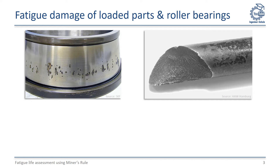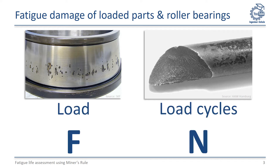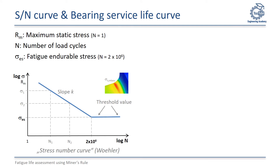In general, the fatigue life of parts depends on the occurring load and the total number of load cycles. For loaded parts stressed during operation, there exists a material-dependent stress-number curve that gives us an indication about the expected fatigue lifetime. If both axes are plotted logarithmically, there is a linear relationship between the stress amplitude sigma and the tolerable number of load cycles N. The higher the stress level, the lower the endurable fatigue lifetime.